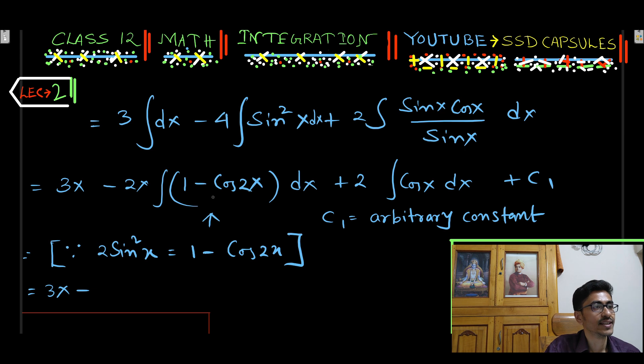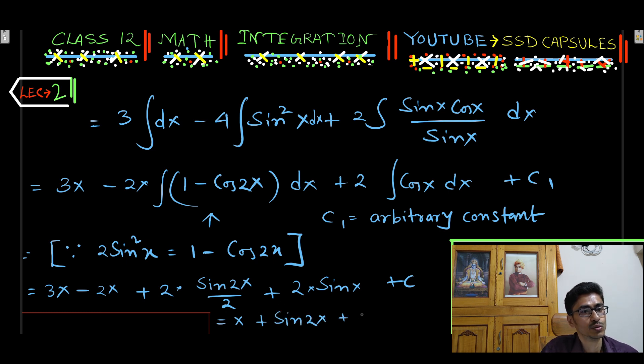Plus 2 integration cos 2x plus 2 sin x, that reached to the end of this problem. 3x minus 2x means x plus sin 2x plus 2 sin x plus c.